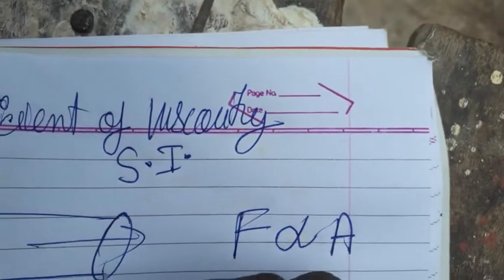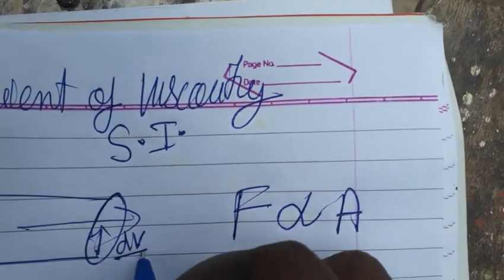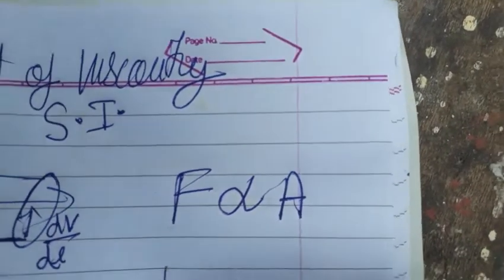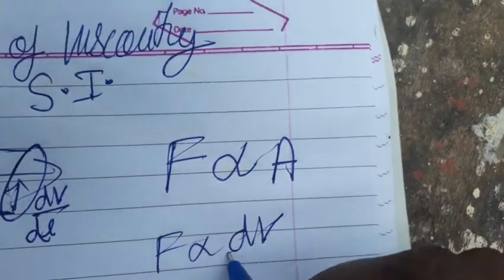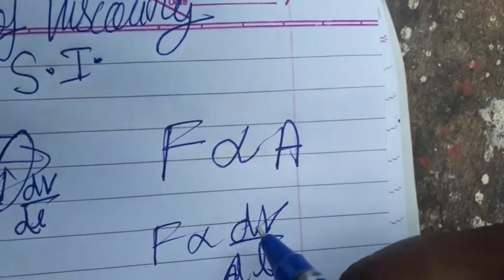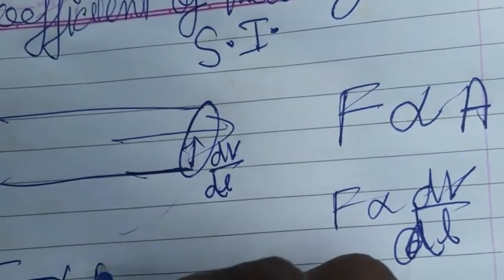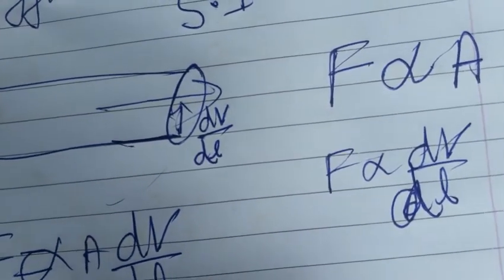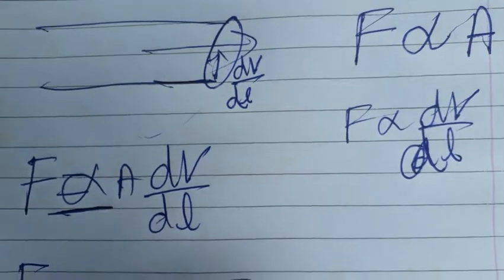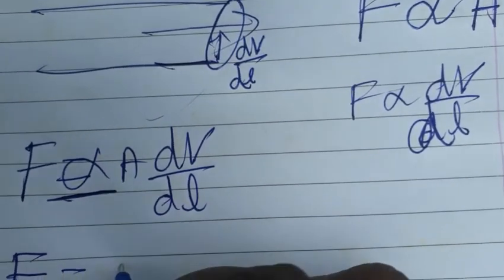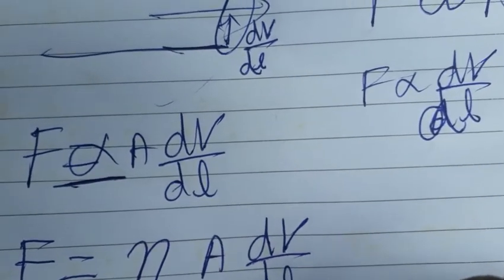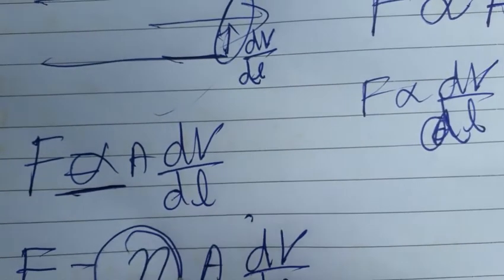The other factor is the velocity gradient — the change in velocity with respect to the change in length from the base. So F is directly proportional to dv/dl. Combining both, F is directly proportional to A·(dv/dl). Removing the proportionality, we include a constant called the coefficient of viscosity, so F = η·A·(dv/dl).